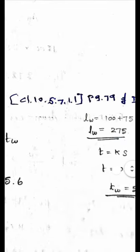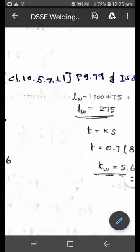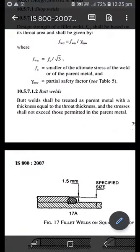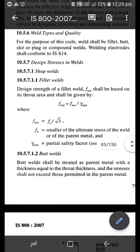For that you have to refer the clause 10.5.7.1.1, page 79 of IS 800. Let me open that page in the code: 10.5.7.1.1 fillet weld, where the design strength of the fillet weld equals fwd = fwn / γmw, where fwn = fu / √3. I will write this equation.